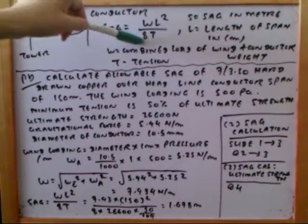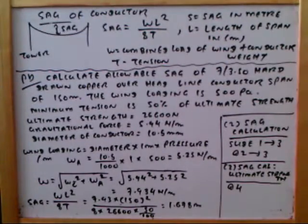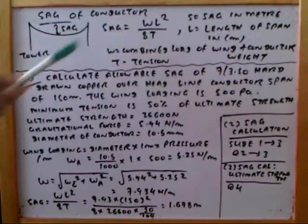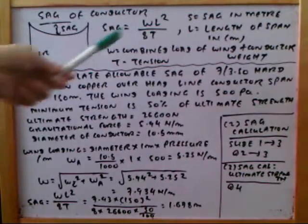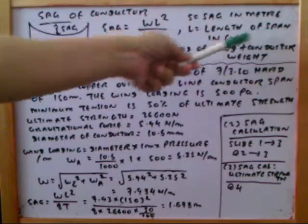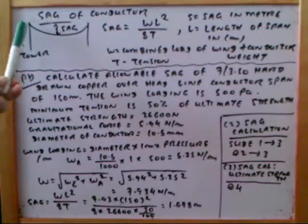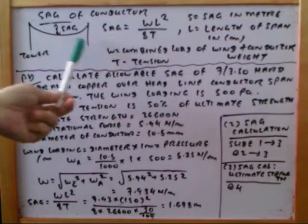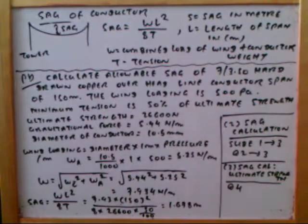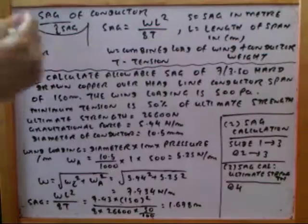The sag can be calculated as wa² divided by 8T. In this case, the sag is in meters. Here, 'a' is the length of the span — the distance from this line to this line. This is the span, the distance between the two towers.